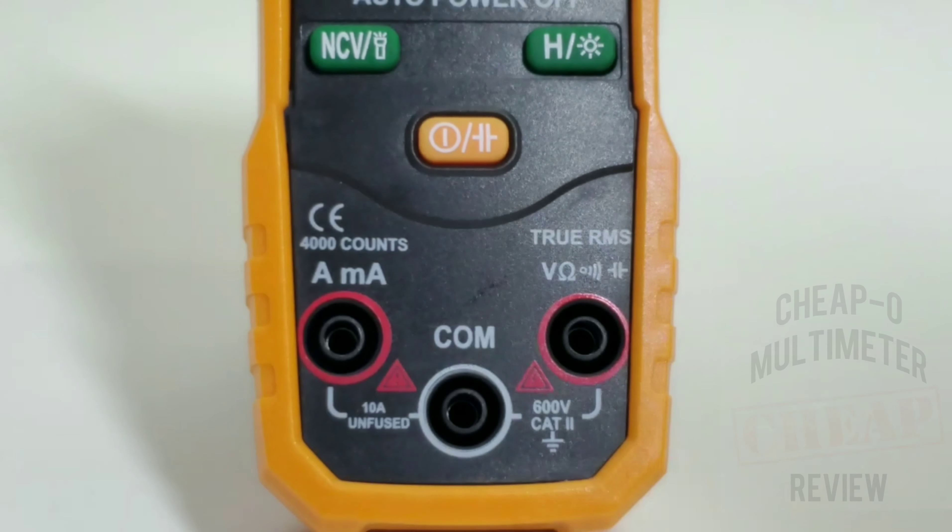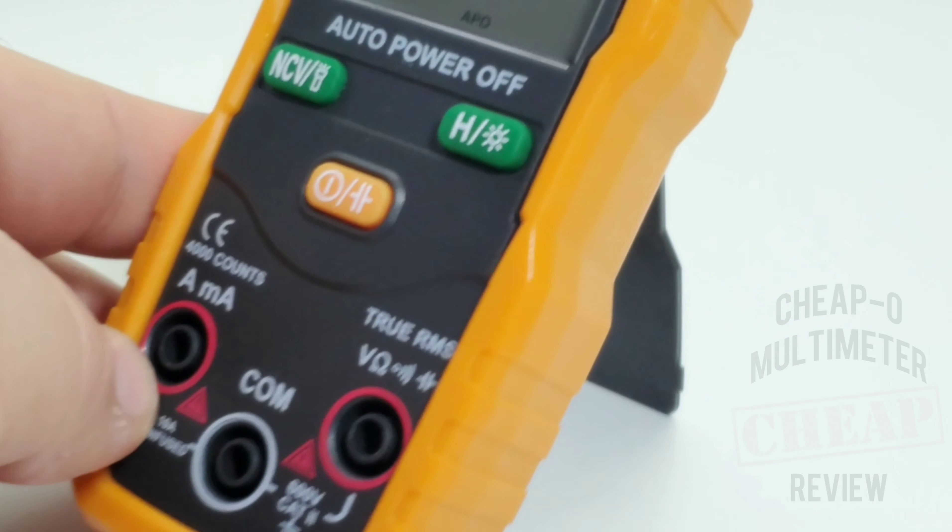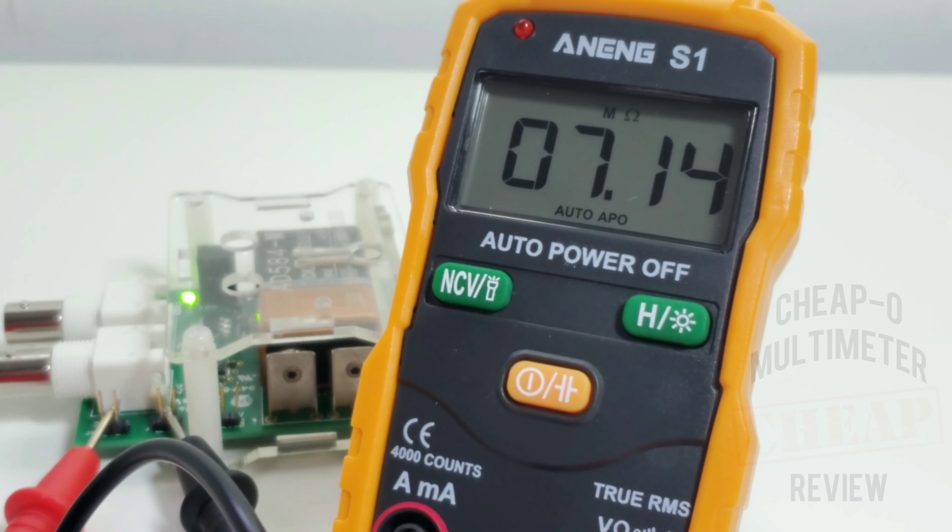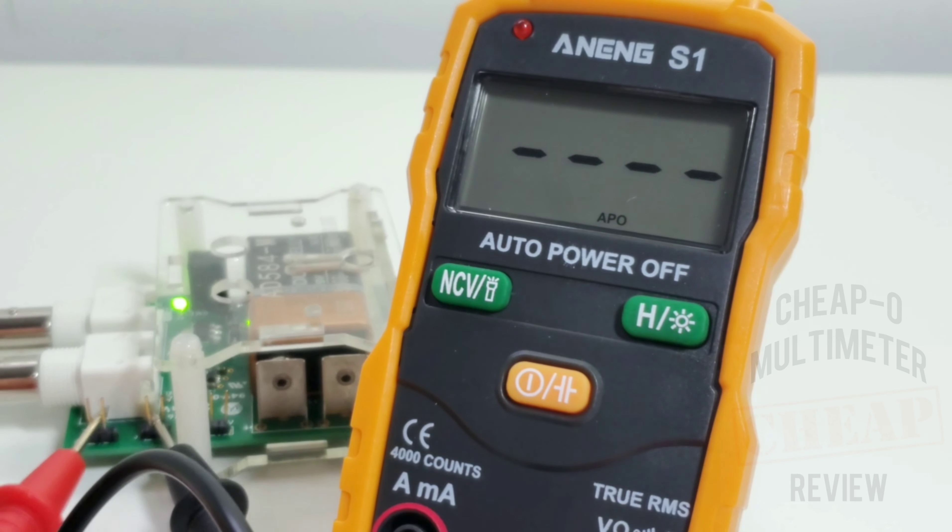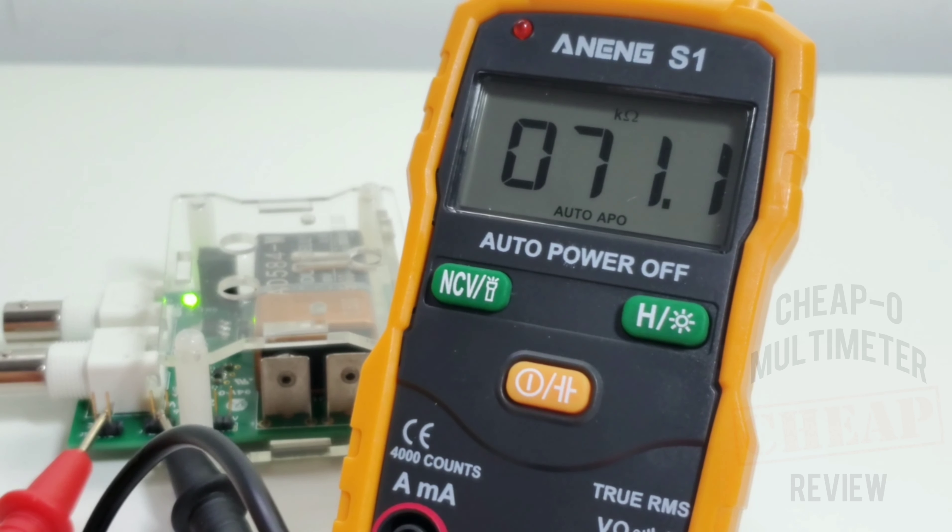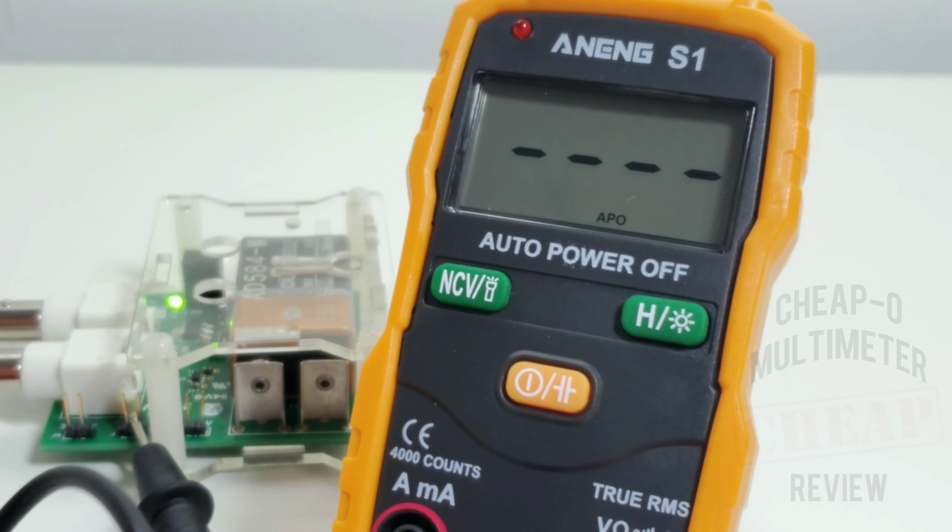Now it does say 10 amps unfused, so it should be an interesting little scenario. In DC volts with the precision reference, we should be looking at 250 millivolts. And guess what, we're not looking at anything because that resolution is just too low for the ANENG to figure out.